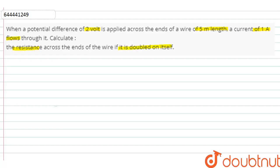So, given: V is equal to 2 volts, I is equal to 1 ampere, L is equal to 5 meters.